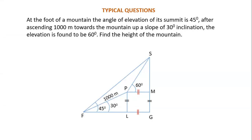This is a typical question from the applications of trigonometry for class 10th. The question is: at the foot of a mountain, the angle of elevation of its summit is 45 degrees. After ascending 1000 meters towards the mountain up a slope of 30 degrees inclination, the elevation is found to be 60 degrees. Find the height of the mountain.